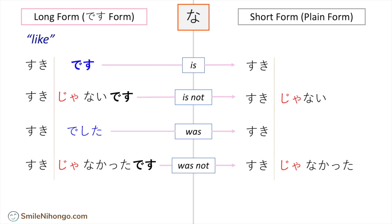For the affirmative forms, it's not as simple. The plain affirmative です becomes だ for na-adjectives. And to convert the past tense: 好きでした changes でした to だった, so 好きでした becomes 好きだった in plain form.